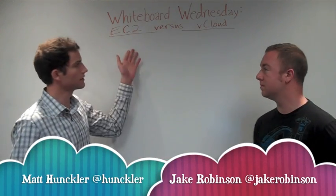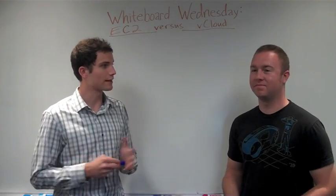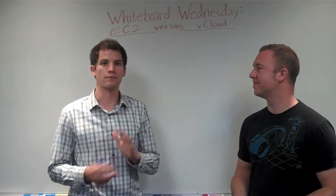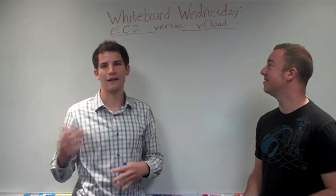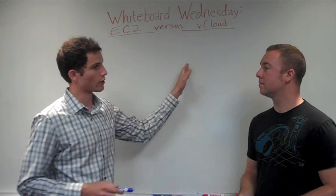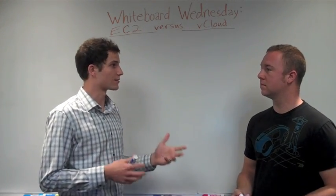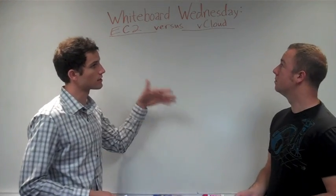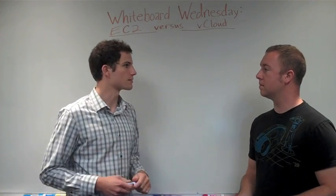Today we're talking about EC2 versus vCloud. There's Amazon EC2, which is a Xen-based self-service cloud, and vCloud, which is both self-service with vCloud Express, and also an internal cloud as well — a VMware-based cloud. What I'd like to do is have you talk a little bit from a technical detail, and then we'll discuss some of the differences.